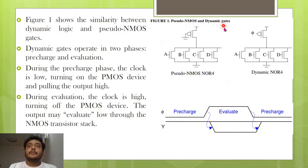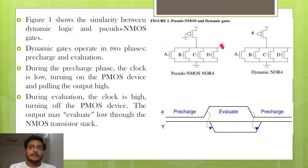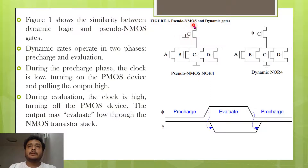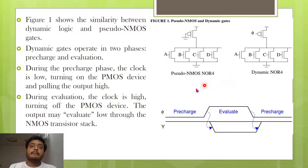Here is the NOR gate example previously shown for pseudo NMOS logic. The pull-down network is realized using NMOS transistors drawn as a stick diagram, with one PMOS device. In pseudo NMOS the gate of PMOS is grounded, but now instead of grounding it, we apply a clock signal phi. This introduces two new concepts: the pre-charge phase and the evaluate phase.